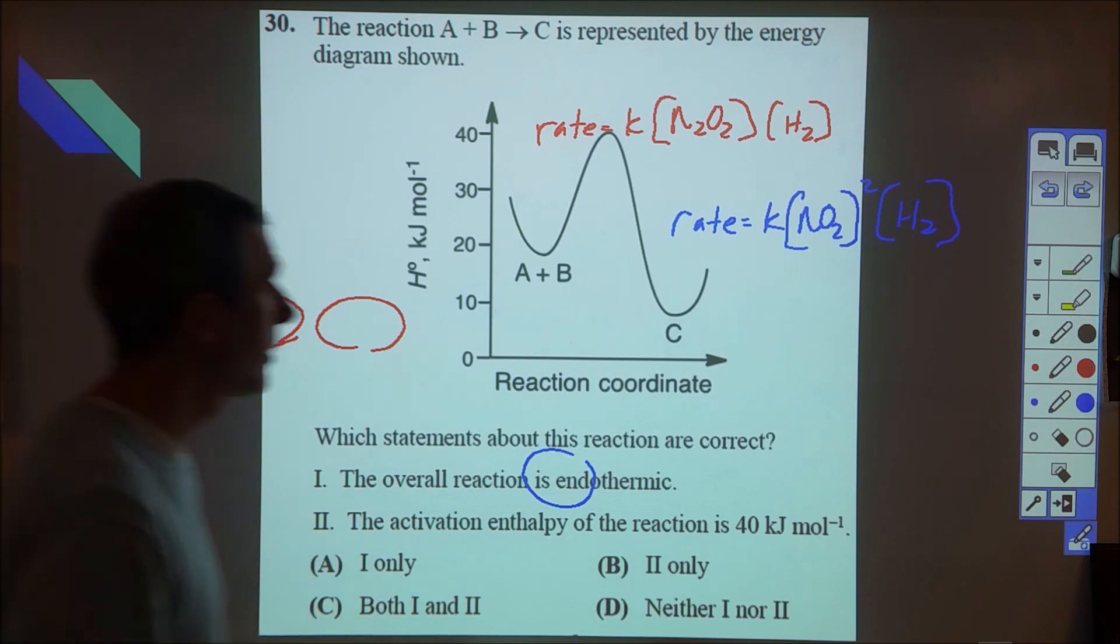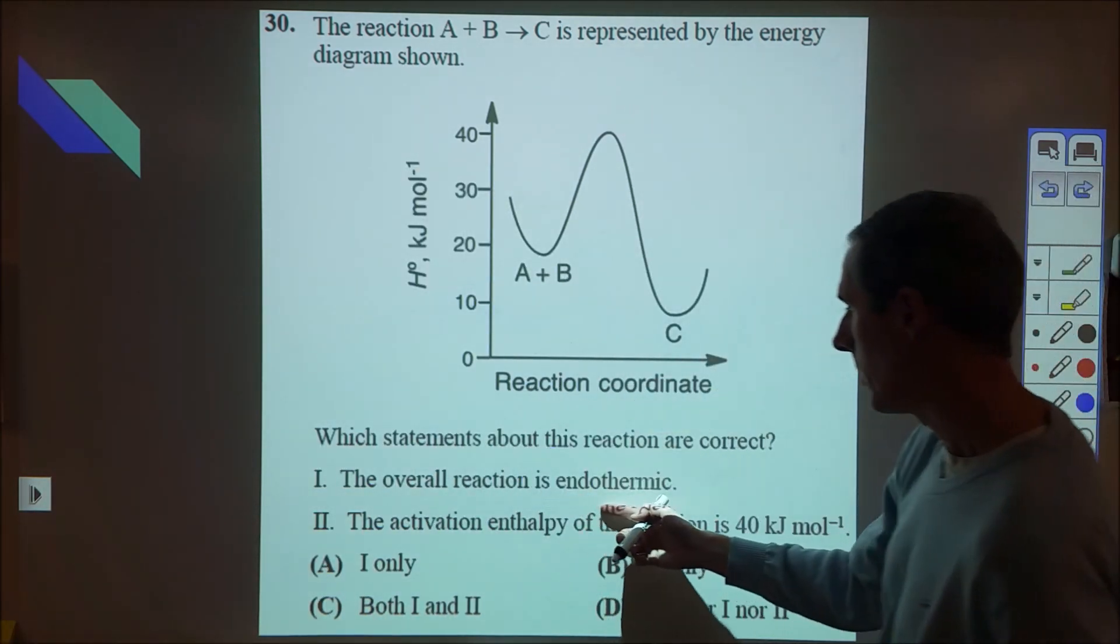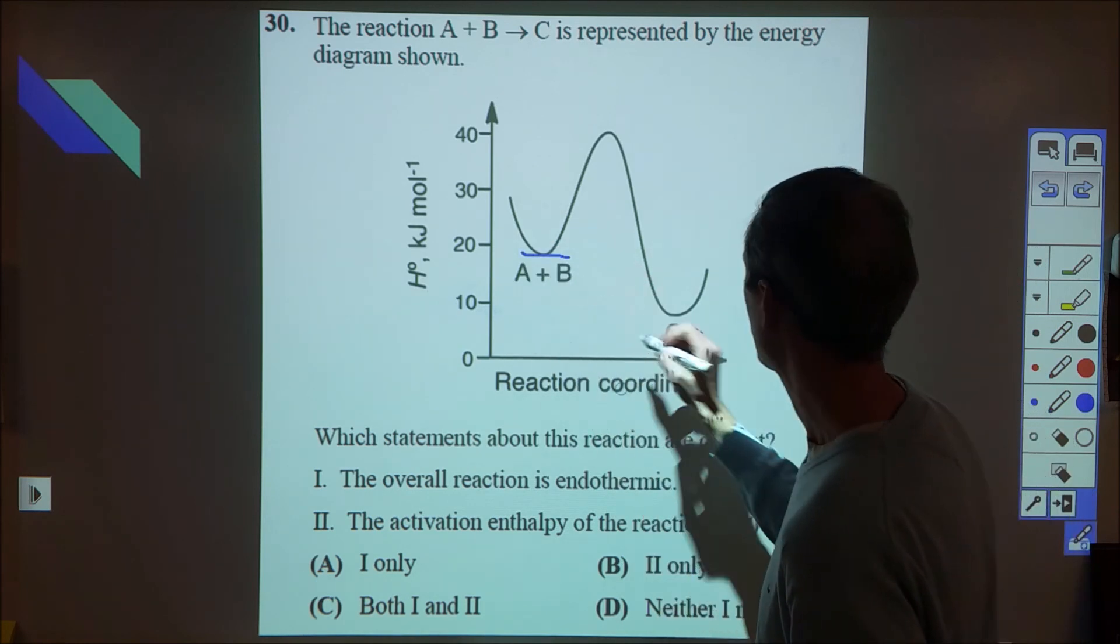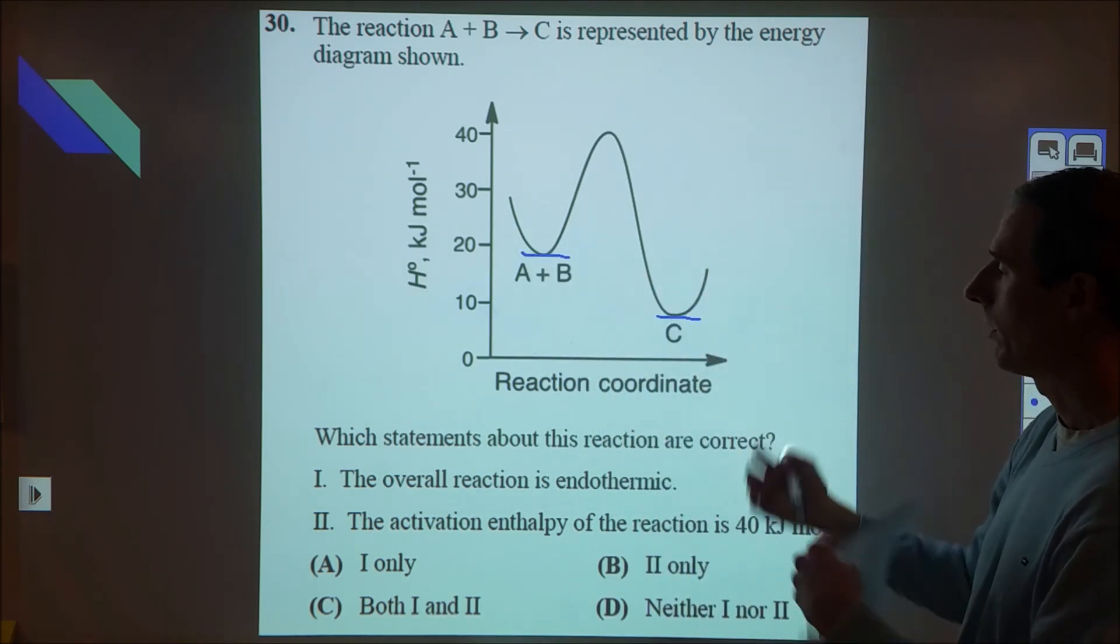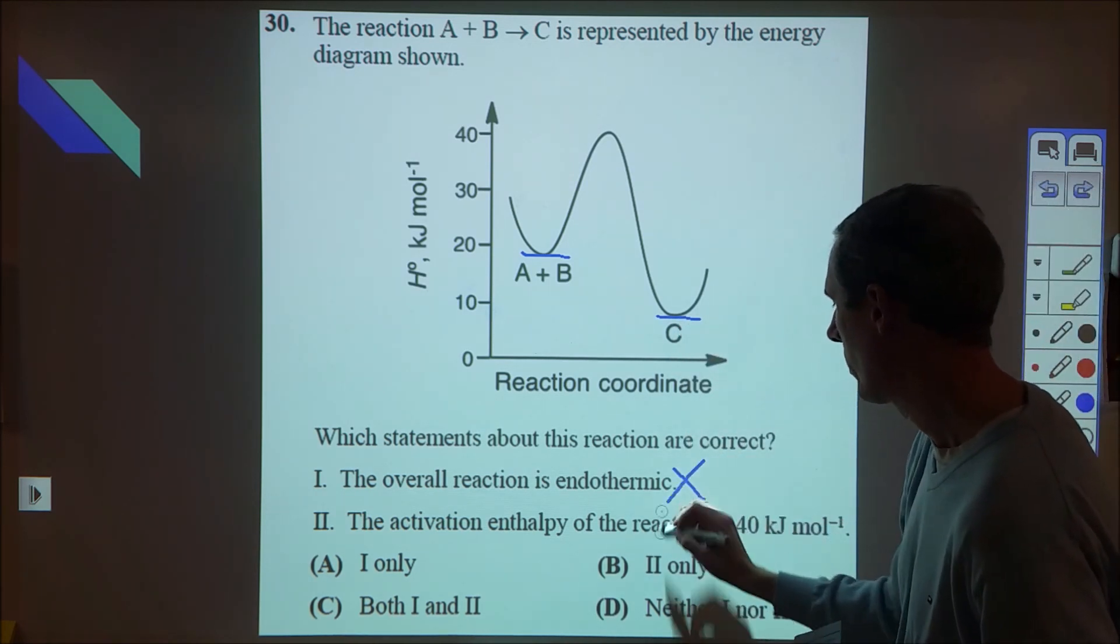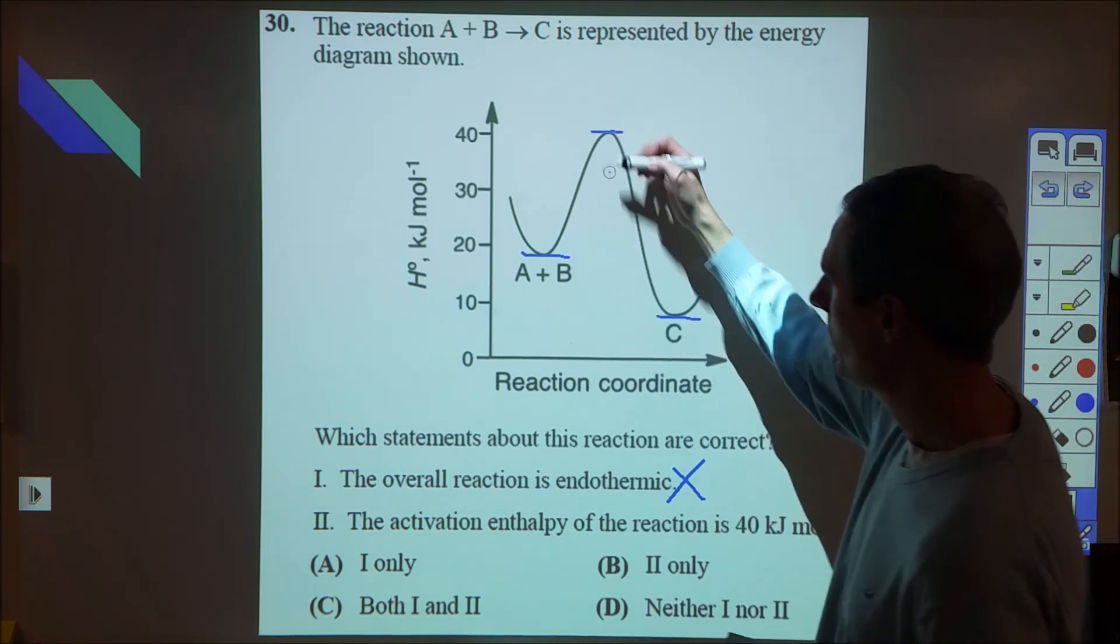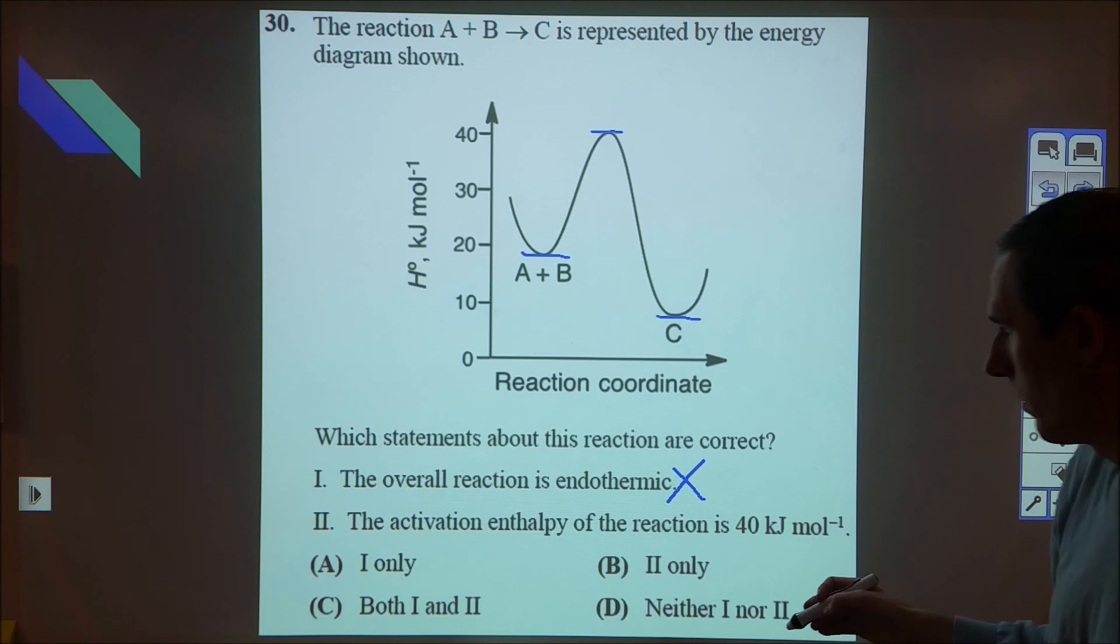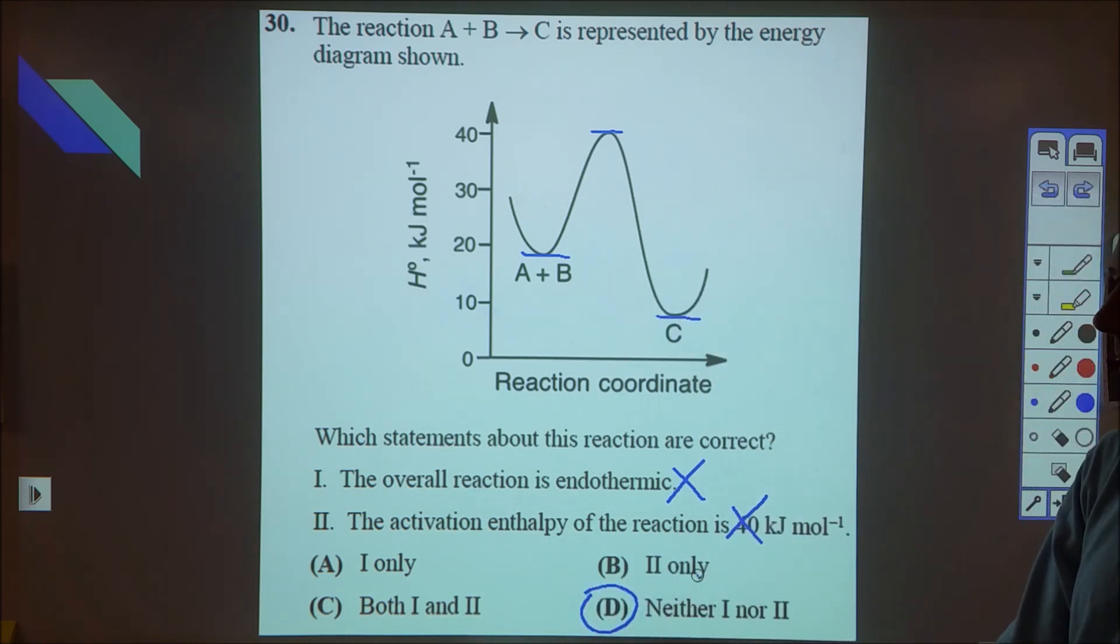And the last one, 30, was also pretty simple. So here it says that the overall reaction is endothermic. We're starting here, we're ending here. That means we're losing chemical energy. The particles are going to be moving faster here, and it's going to get released to the surroundings. So that would be exothermic, and then the activation energy is 40. It goes from 20 to 40, but the activation energy would only be 20, so neither is true, and D is our correct answer.